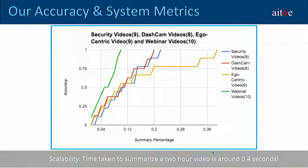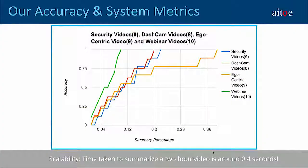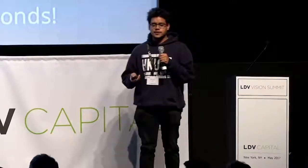The experiments we conducted show the minimum summary percentage needed to cover all key events. Looking at the blue line — that's for surveillance videos — at around 20%, we can capture all key events without missing anything. That means you can watch a one-hour surveillance video in just 12 minutes. We've done this analysis across several categories of videos and found that keeping the summary percentage at 30% allows us to express all key events of any category.